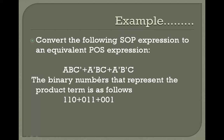The first step is to represent it in its binary equivalent. In a sum of product form, simple variables are represented by 1 and complemented variables are represented by 0. Therefore A=1, B=1, C'=0; then A'=0, B=1, C=1; then A'=0, B'=0, C=1.